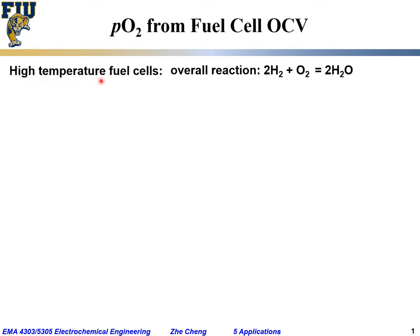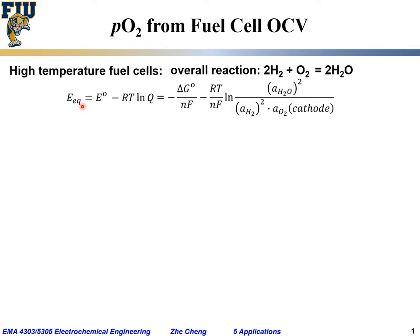We are based on the principle for a high-temperature fuel cell. We know that the overall reaction would be hydrogen combined with oxygen to form water, and as we said before, the equilibrium cell potential would be the standard cell potential E0 minus RT over NF times the natural log of the reaction quotient. The standard cell potential would be minus the standard free energy change over NF, and the reaction quotient would be the activity of the product raised to the power of its stoichiometry number over the product of reactants raised to the power of their stoichiometry coefficients.